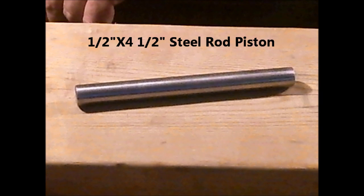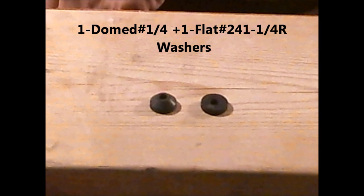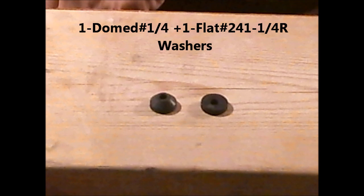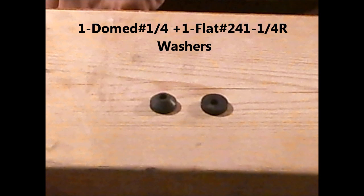Next up, you're going to need two valve washers. One is a dome type washer, marked quarter on the bottom of it, and the other is a flat valve type washer, marked 241-1 quarter R. These are the kind of washers that you use on hose bibs or sink valves.